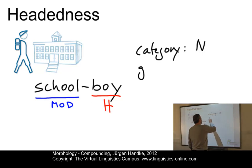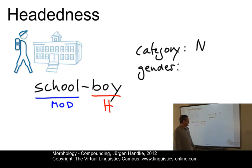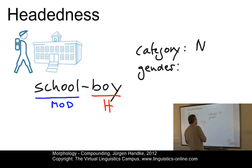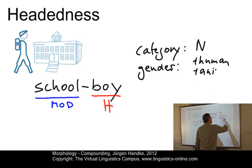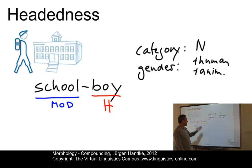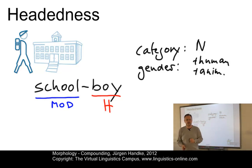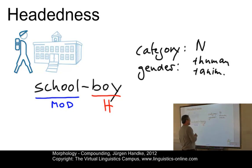The head also determines gender. Gender in present-day English is a difficult issue. We can draw a distinction between animate, inanimate, and human versus non-animate. We clearly know that boy is human and animate, and we can signal that by the following operation: if we insert this item into a relative clause, we have 'the schoolboy who' and not 'the schoolboy which,' because 'who' is related to boy, whereas 'which' would be related to school.